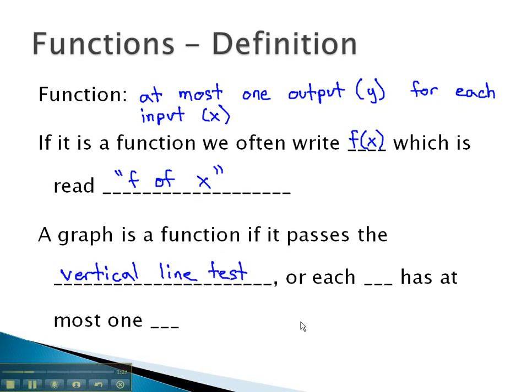In other words, we're going to draw a vertical line through a graph. The graph can only be intersected once in order to be a function, because we can only have, at most, one output. In other words, each x has, at most, one y that corresponds with it.